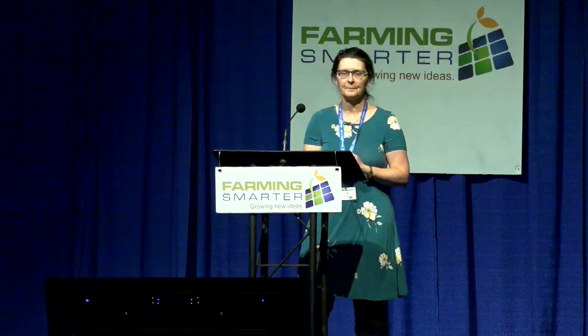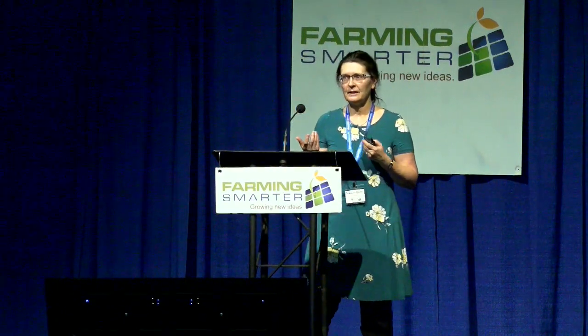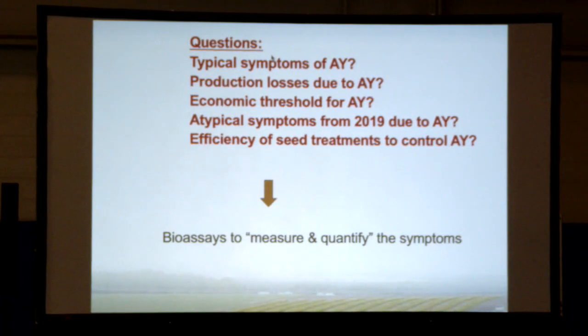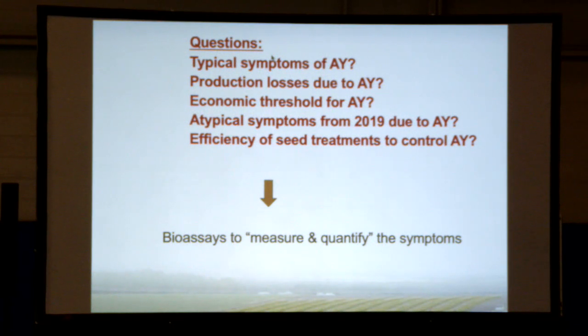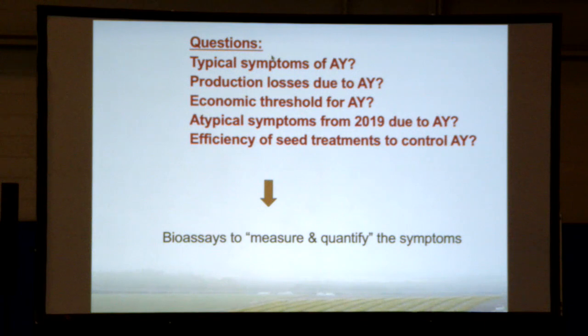The big questions are: what are the exact typical symptoms? What are the real production losses due to Aster Yellows? What are the atypical symptoms from 2019 — where are they coming from, is it really Aster Yellows or something else? And do seed treatments actually protect the plant against the leafhopper?